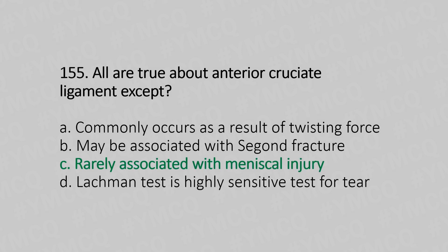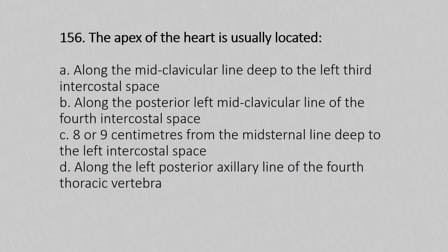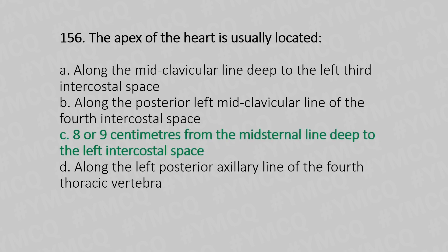Now let's move to question number 156. The apex of the heart is usually located. Option A: along the midclavicular line deep to the left third intercostal space. Option B: along the posterior left midclavicular line of the fourth intercostal space. Option C: 8 or 9 cm from the midsternal line deep to the left intercostal space. Option D: along the left posterior axillary line of the fourth thoracic vertebra. And the answer is Option C: 8 or 9 cm from the midsternal line deep to the left intercostal space.